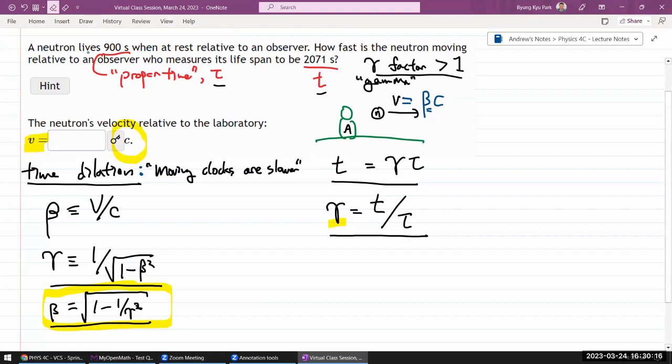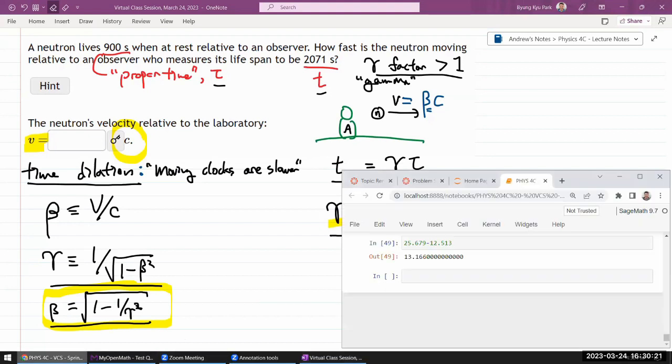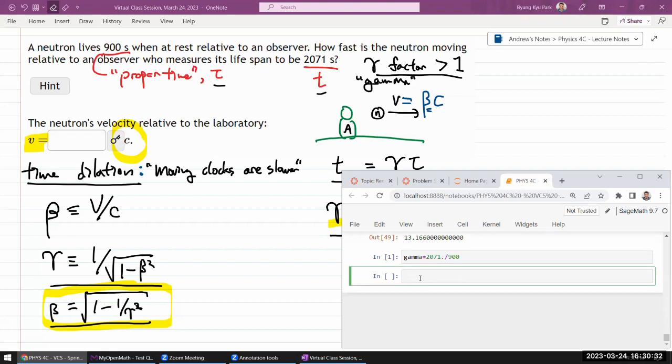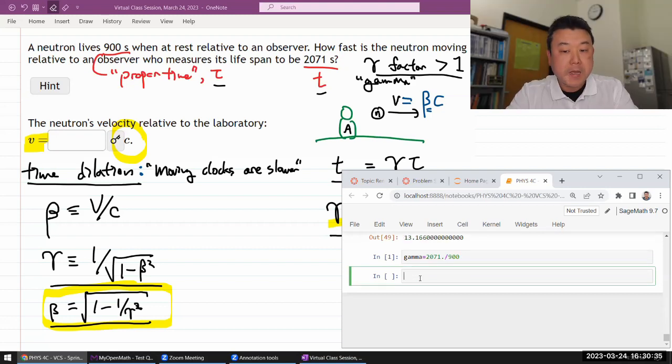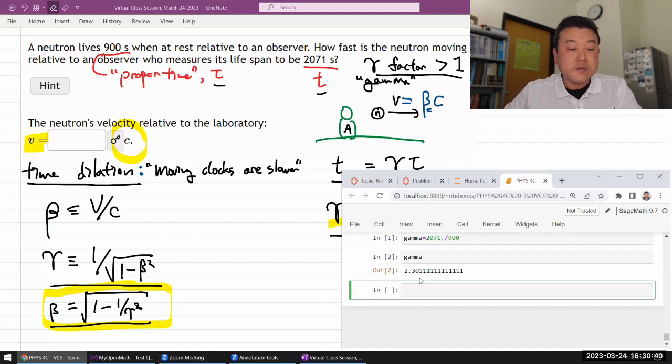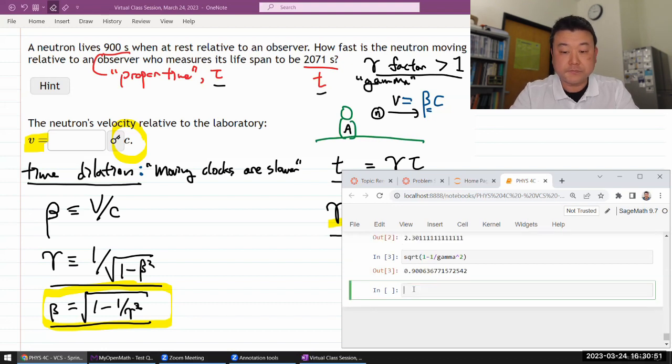Let me just calculate the numbers. I have pointed out that the information given in the question text basically gives us a way to calculate gamma. Gamma is the ratio of those two times, 271 seconds divided by 900 seconds. It's not printing out gamma, but there it is. So since they are asking for beta, let me calculate beta this way. It's a square root of one minus one divided by gamma squared. So 0.901.